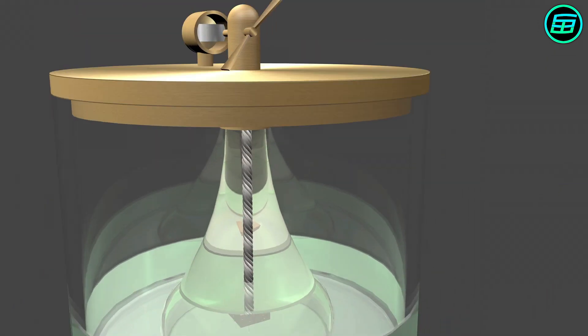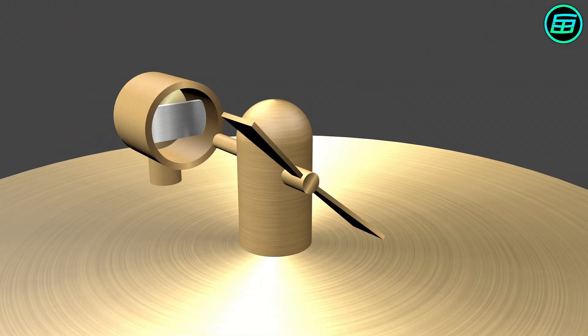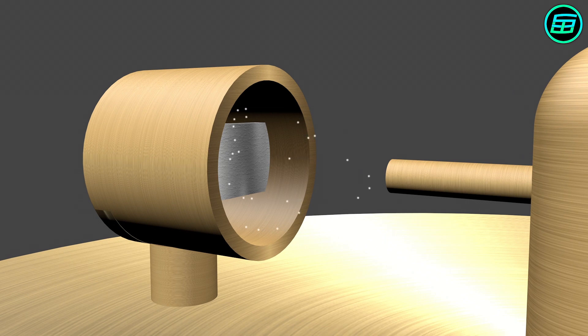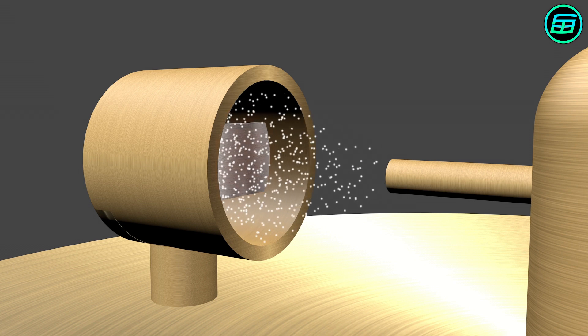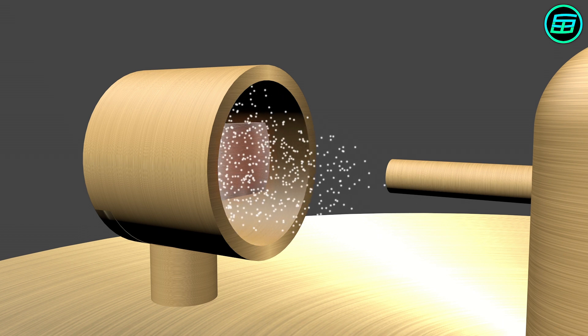When the stopcock is opened, hydrogen molecules reach the nozzle and are sprayed onto the platinum sponge. Hydrogen molecules meet atmospheric oxygen molecules on the platinum sponge, which serves as a catalyst, and water is formed.